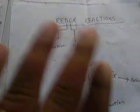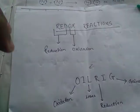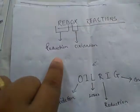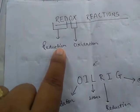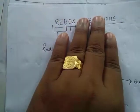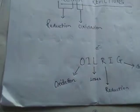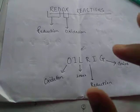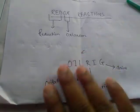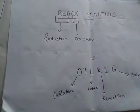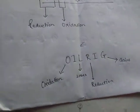So, redox reactions means the reaction where reduction and oxidation take place simultaneously. Now coming to oxidation and reduction — a very easy example: if you remember the formula OIL RIG, then you'll never forget what is oxidation and what is reduction.